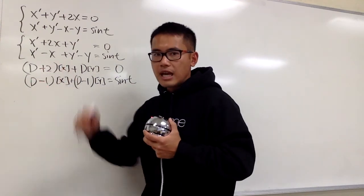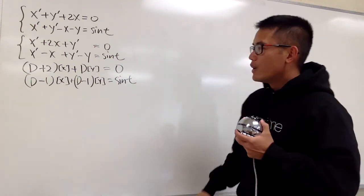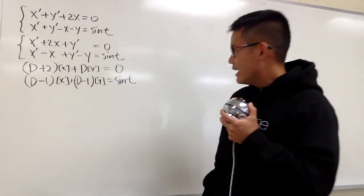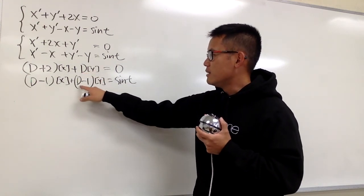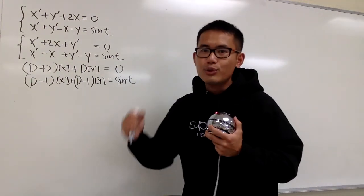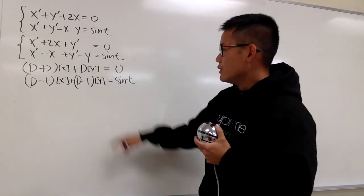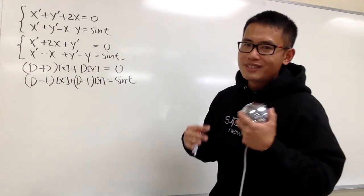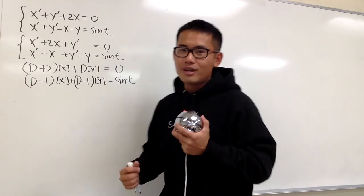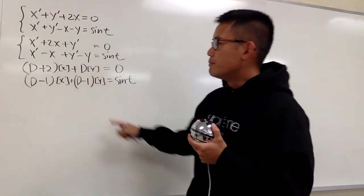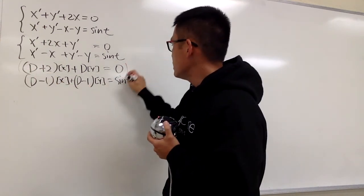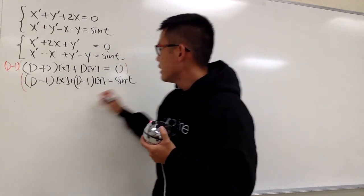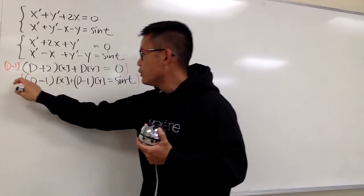Now, all the x terms are lined up, all the y terms are lined up, and then everything else is on the other side. To eliminate, we have a choice — you can choose to eliminate either x or y. As we can see, the thing in front of the y right here is just D and then D minus 1; it's smaller. So I will just choose to eliminate y first. To do so, right here we have D, right here we have D minus 1. So let me just multiply — technically it's not really a multiplication but it works almost the same, so I will just use the word multiplying throughout the video. I will multiply the first equation by D minus 1, and then for the second equation, I need to have a D right here, so let me multiply by D.